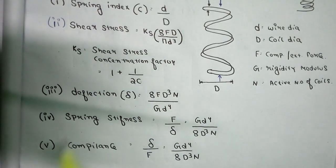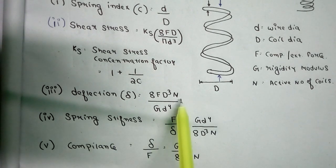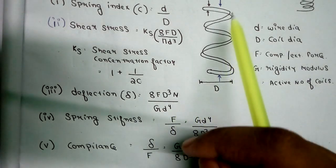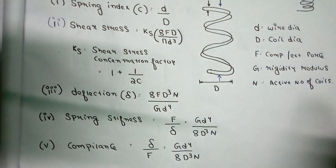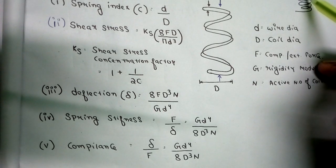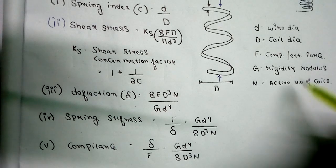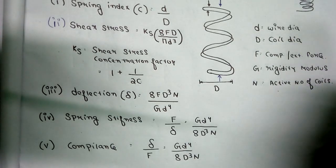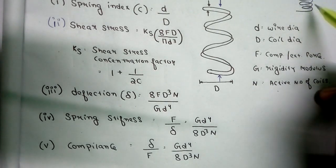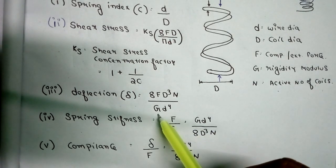The next important formula is deflection, denoted by δ: δ = (8F D³ n) / (G d⁴), where n is the active number of coils and G is the rigidity modulus. The active number of coils is the count of complete rotations made by the spring wire. For example, if the spring completes four full circles, the active number of coils is four.